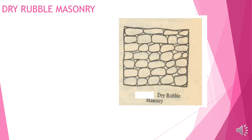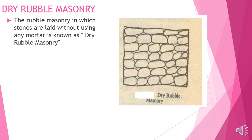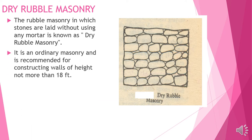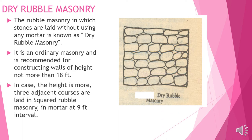Dry rubble masonry: the rubble masonry in which stones are laid without using any mortar is known as dry rubble masonry. It is an ordinary masonry recommended for constructing walls of height not more than 18 feet. If the height is more, three adjacent courses are laid in square rubble masonry with mortar at 9 feet.